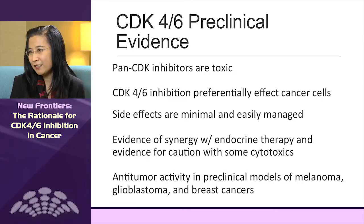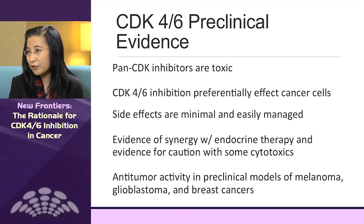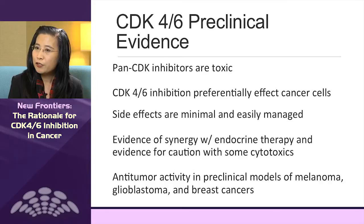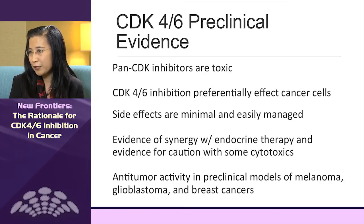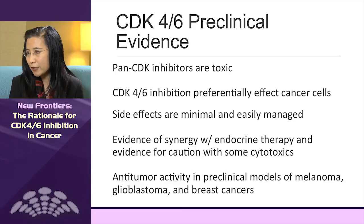What preclinical evidence of the safety and effectiveness of CDK4-6 inhibitors do we have? In contrast to pan-CDK inhibitors, which are toxic and have side effects on normal cells, CDK4-6 inhibitors have a preferential effect on cancer cells. In preclinical studies, CDK4-6 inhibitors have shown preferential effectiveness in estrogen receptor-positive, HER2-negative breast cancers and also in HER2-positive cancers, but not as much in basal-like breast cancers. There is synergy between endocrine therapy and CDK4-6 inhibitors, but combining with chemotherapy may not be optimal, as they could counteract each other.